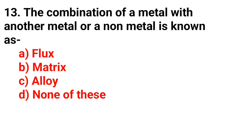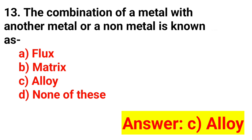Question 13. The combination of a metal with another metal or a non-metal is known as? The answer is Option C: Alloy.